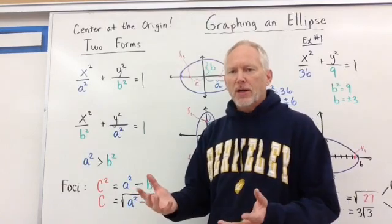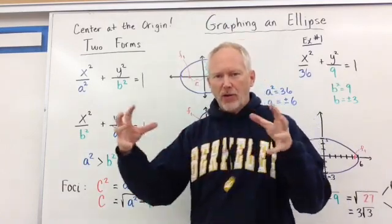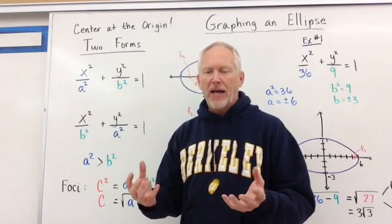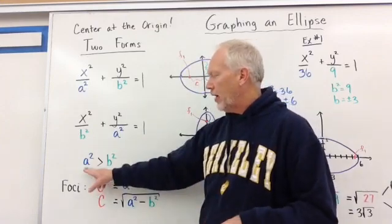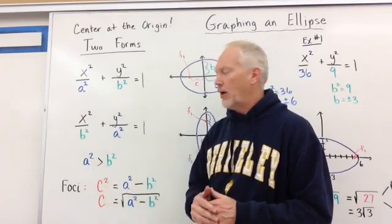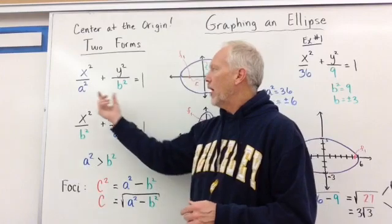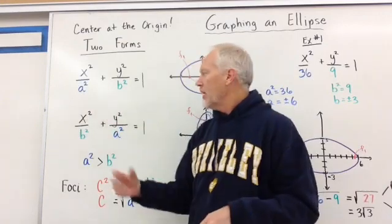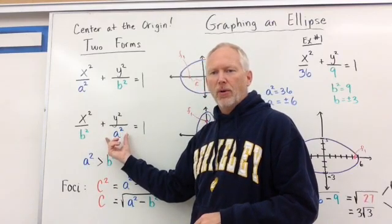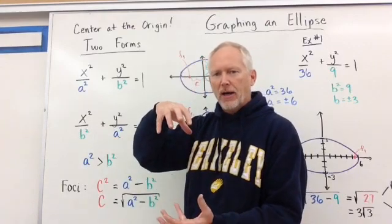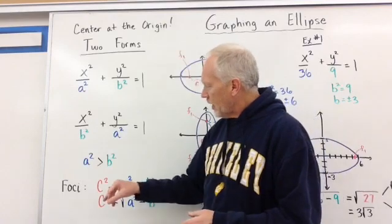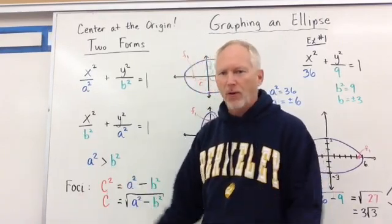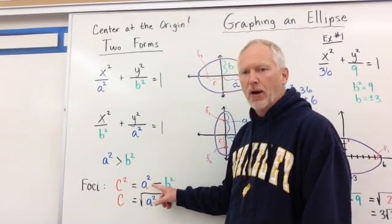You're asking, what's the difference between the two? Well, one is going to be elongated in the X direction and one will be elongated in the Y direction. And how is that determined? It's determined by the value of a and a squared. A squared should always be the bigger number than b squared. So if the larger number is under X, it will elongate in the X direction.